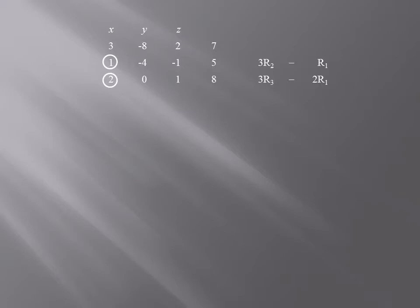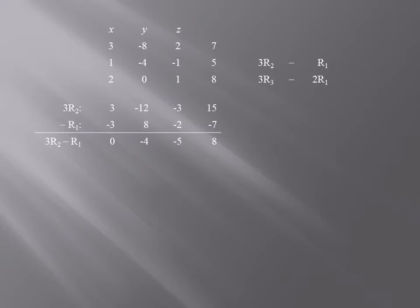Let me show you how you get the results of these row operations. 3 times row 2 is: 3 times 1 equals 3; 3 times negative 4 equals negative 12; 3 times negative 1 equals negative 3; and 3 times 5 equals 15. Subtracting row 1 is equivalent to multiplying row 1 by negative 1 and then adding, so negative row 1 is negative 3, 8, negative 2, and negative 7. We now add those two rows and get: 0, negative 4, negative 5, and 8. That's the new row 2.